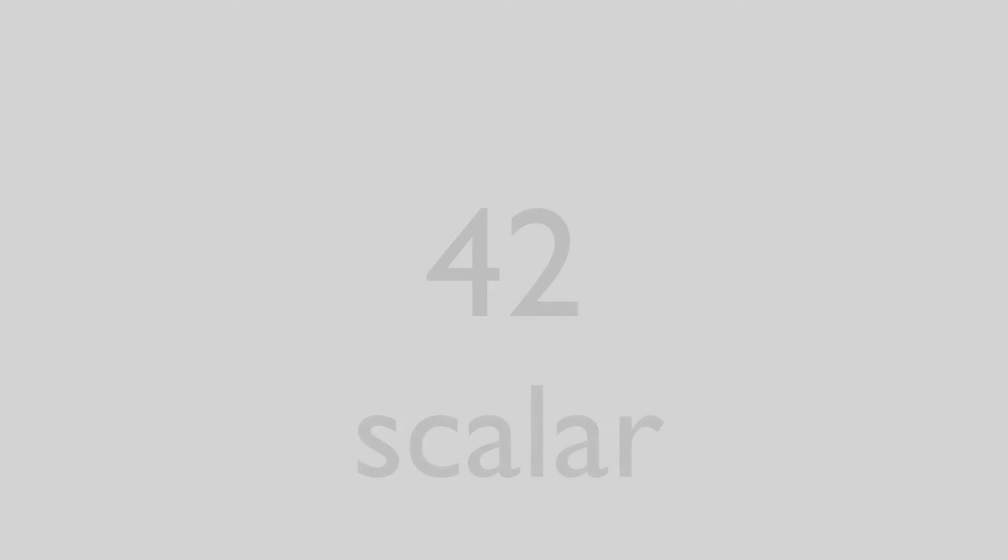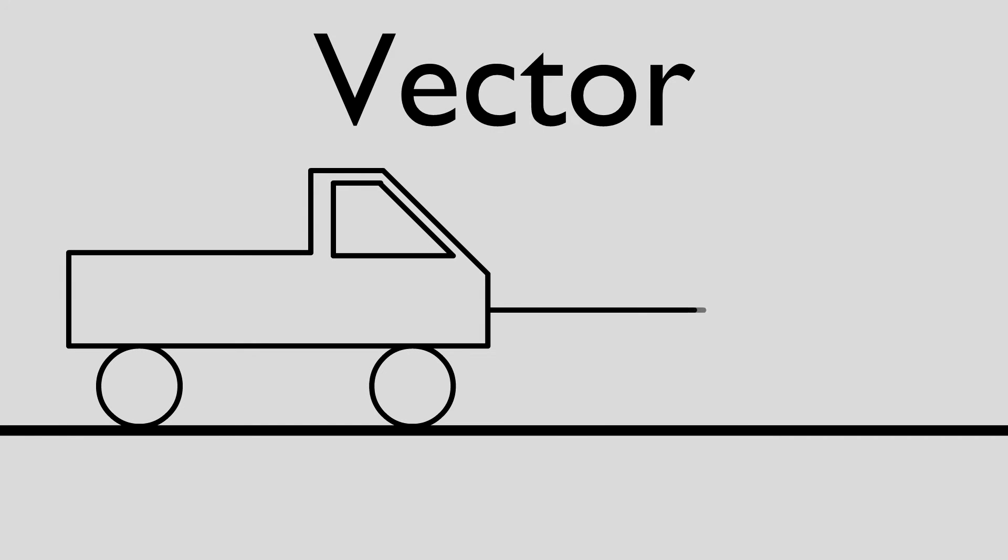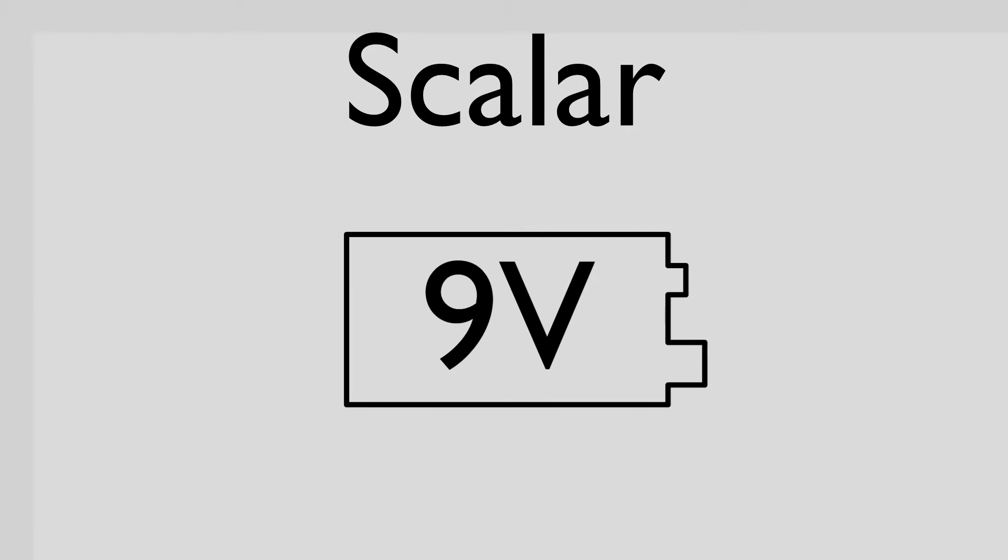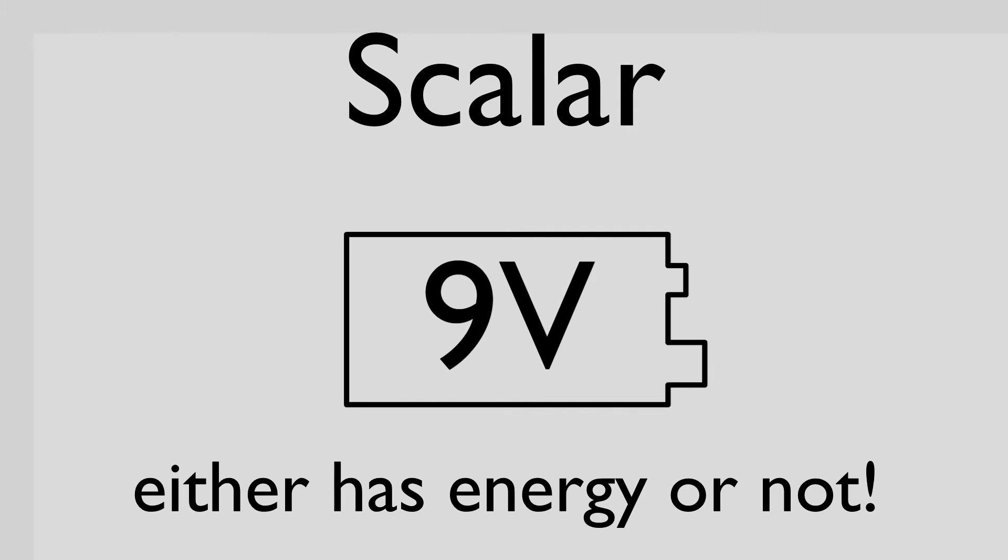A good example of a vector is acceleration. Every time something accelerates, it must be doing so in some direction. A good example of a scalar, on the other hand, is energy. An object does not have an amount of energy in some direction, it just has energy.